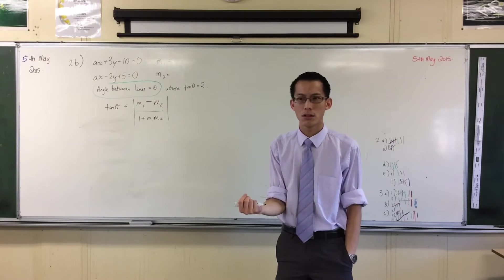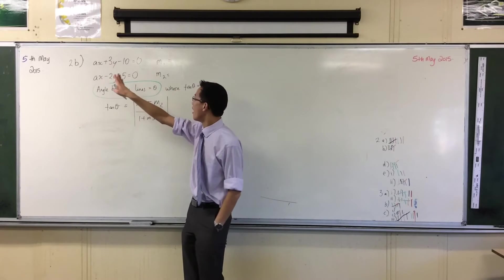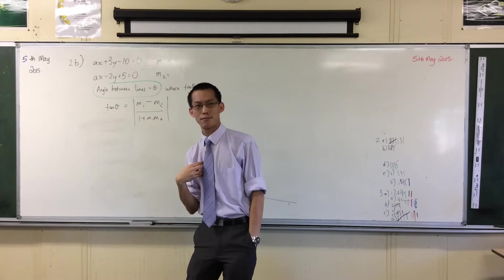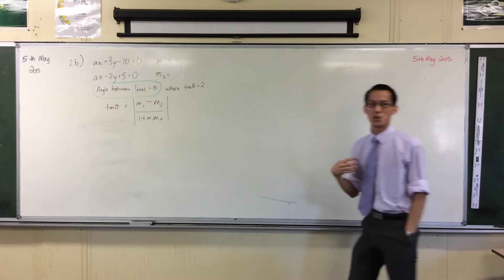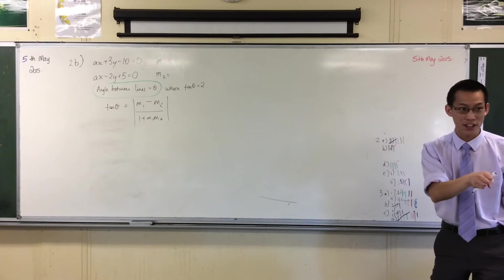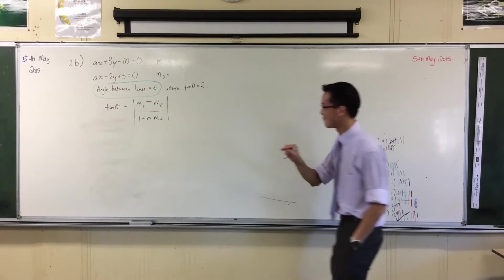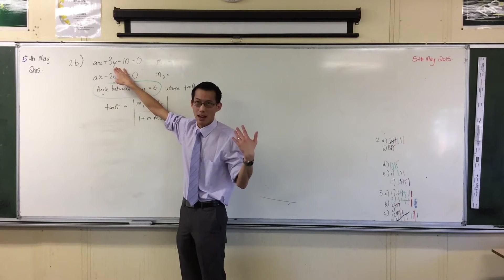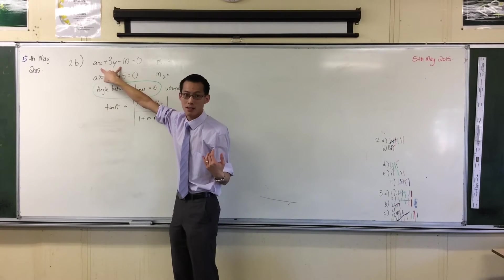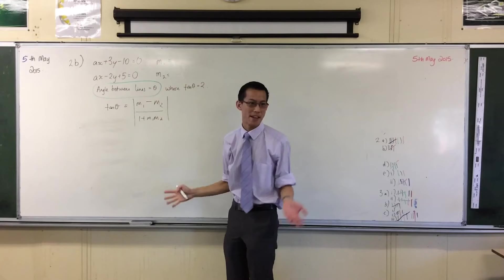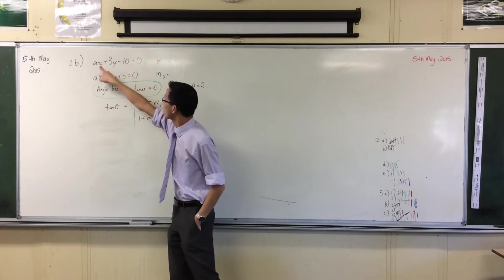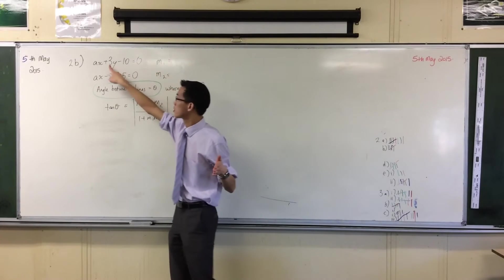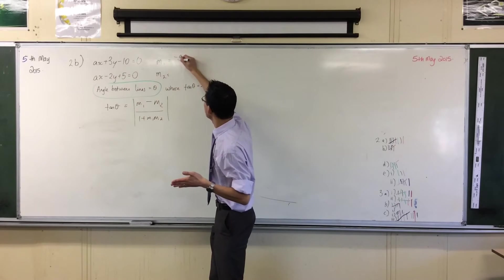So I want to make y the subject so I have mx plus b form. We said I want to make y the subject so you can move y across the other side. I personally think about moving the x over to the other side - I don't care about the constant because it doesn't affect the gradient. So this is going to become minus ax on the other side, and then to get mx plus b I'm just going to divide by three. So without having to write anything down I have a gradient - do you see what I've done? These are the little time saving things.